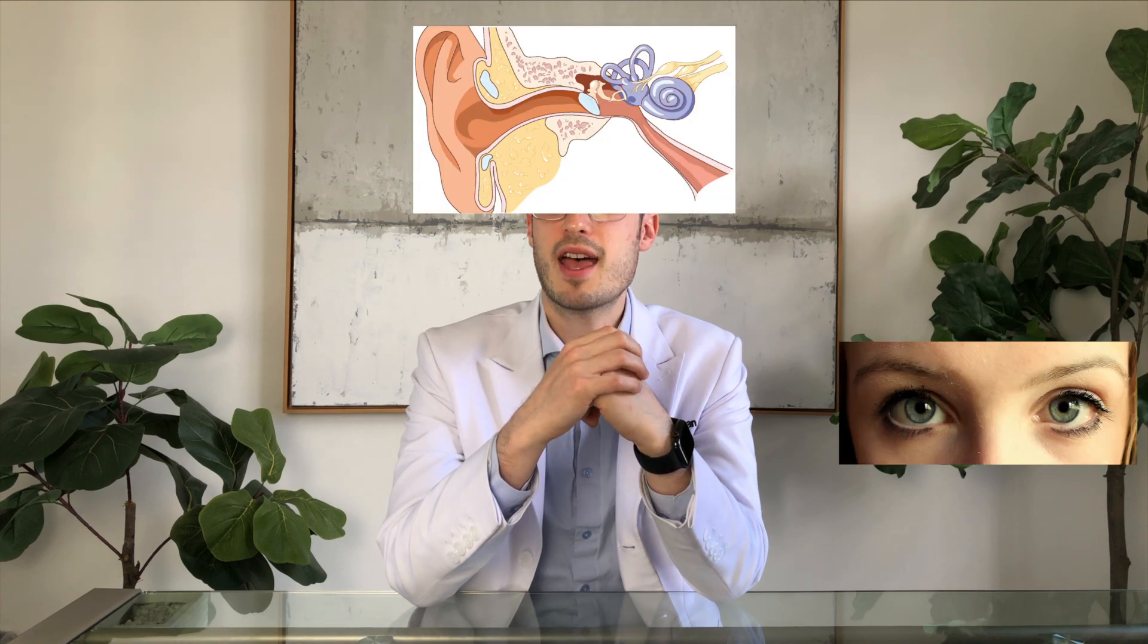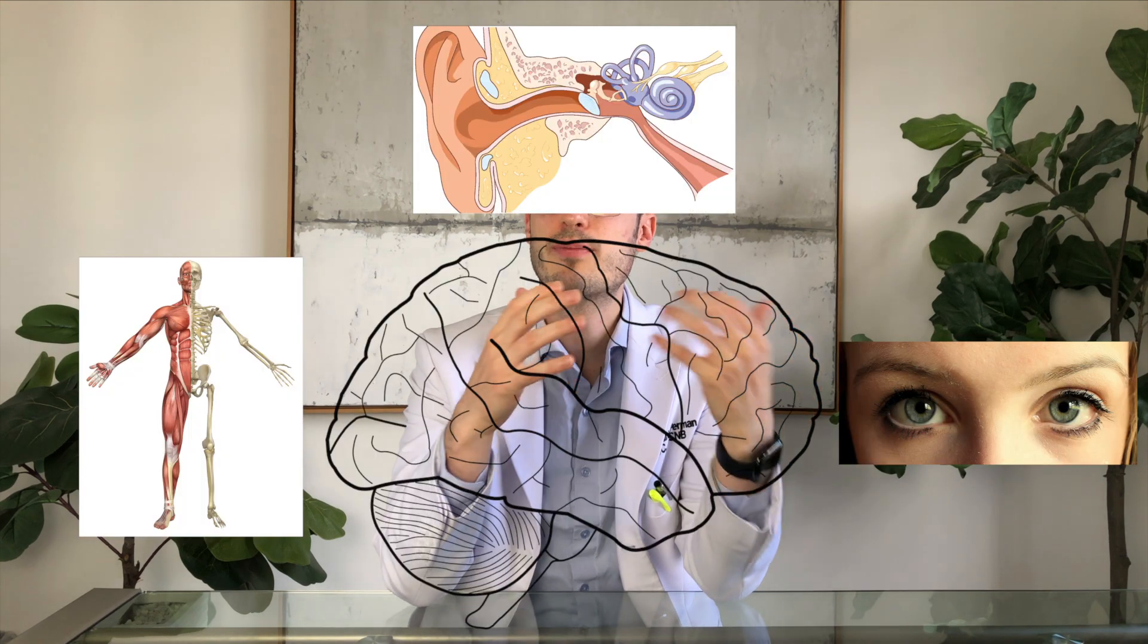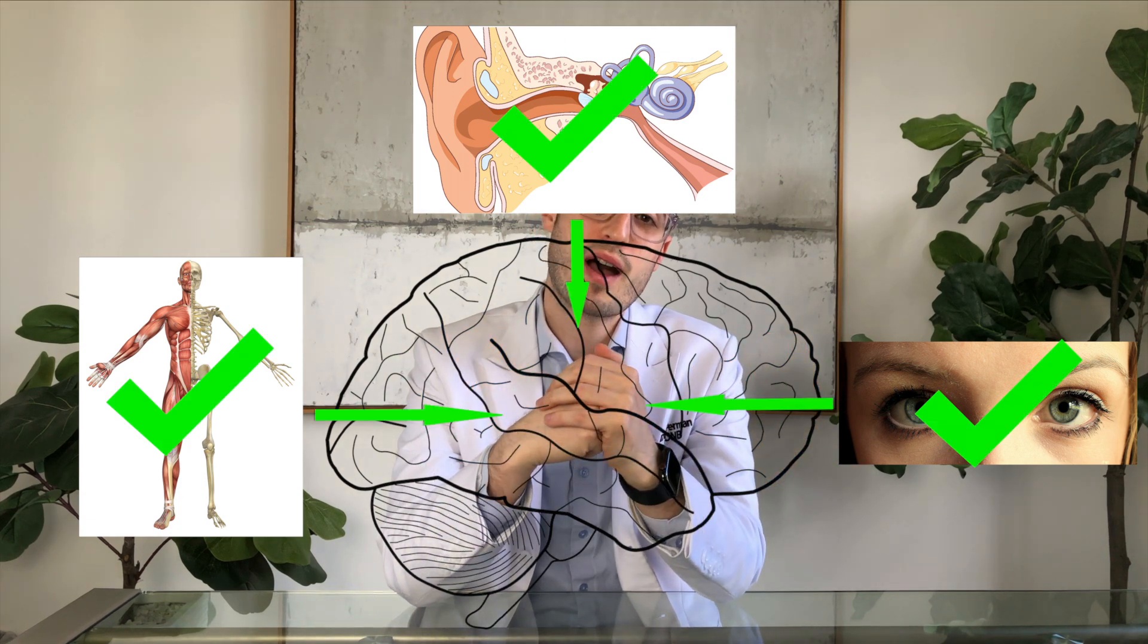As a refresher, the purpose of gaze stability exercises are to correct the way your eyes, head, and neck all move together so that your brain can better understand where your body is in space.